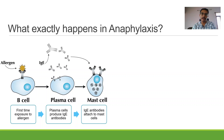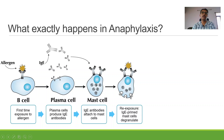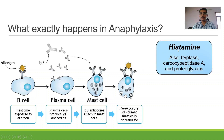Now the mast cells have become primed mast cells, or ready mast cells. They will produce a lot of chemical mediators and store them within the mast cells — waiting for the allergen to come back again. When there is a re-exposure of the same allergen, primed mast cells degranulate, leading to the release of a lot of chemical mediators. Remember that this degranulation is happening on re-exposure, not at the first exposure. Out of the different chemicals released, histamine is the most important one for the anaphylaxis response. There are other mediators as well — tryptase, carboxypeptidase, proteoglycans — but they are not as important as histamine.